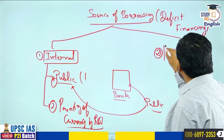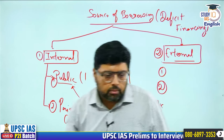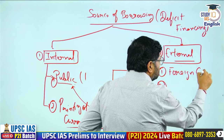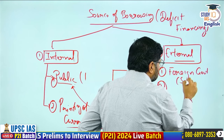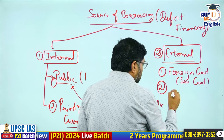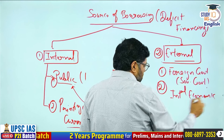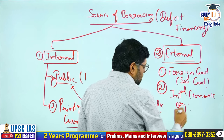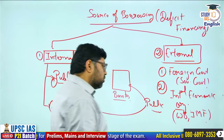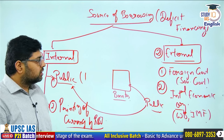When we talk about external sources, we have two choices. Number one, the government can take borrowing from foreign governments, also called sovereign governments. Second, the government can take borrowing from international economic organizations — such as the World Bank, IMF (International Monetary Fund), or the Asian Development Bank.